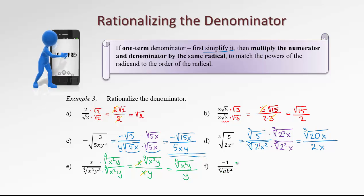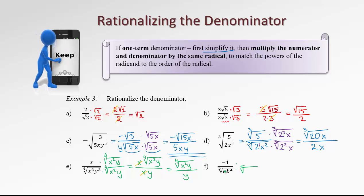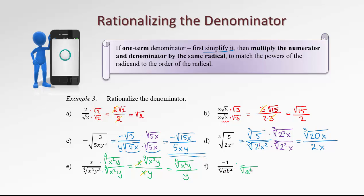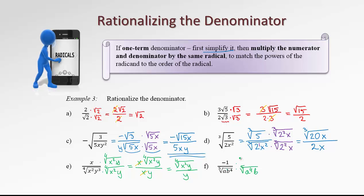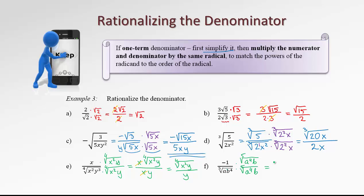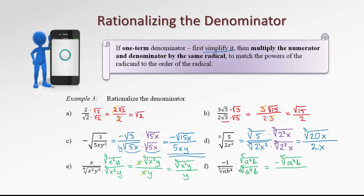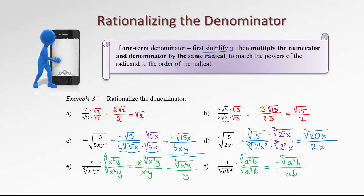And the last one — what do we need to multiply this denominator by? It has to be a fifth degree root, and then we need to match the power of a to make it the fifth power of a. Since we have one a, we need four more a's — the fourth power of a. And b was to the fourth, so we need one more b to match it to five. Let's do the same to the numerator — fifth degree root of a to the fourth times b. This equals negative fifth degree root of a to the fourth b over a and b, because we chose that exact root to cancel the radical.